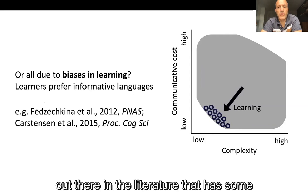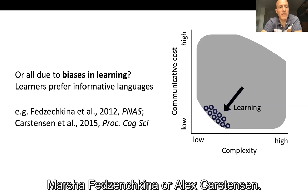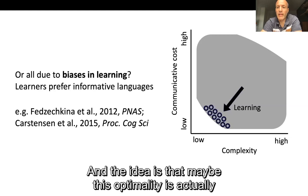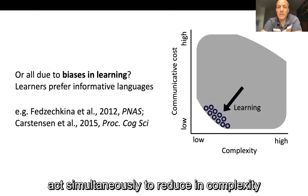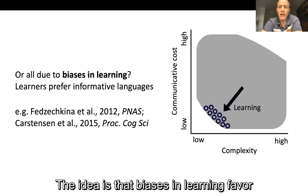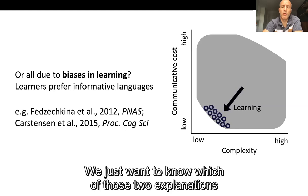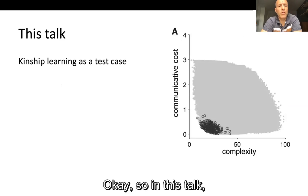There is an alternative suggestion in the literature with some experimental support — for instance, in papers by Masha Fejichkina or Alex Carstensen. The idea is that this optimality is actually entirely due to biases in learning, which act simultaneously to reduce complexity and also reduce communicative cost — so biases in learning favour informative simple languages. We want to know which of those two explanations is more likely to be true.